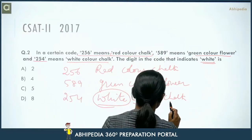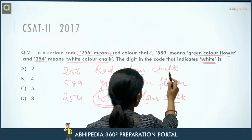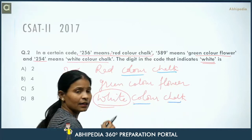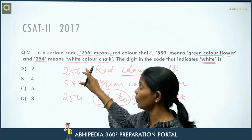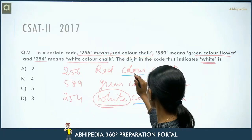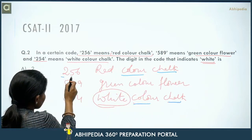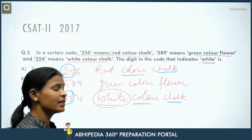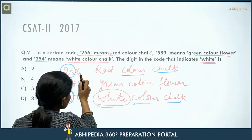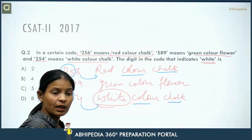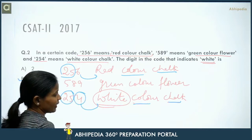White appears only in the third statement. 'Color' and 'chalk' are common in the first and third statements — so their corresponding numbers 2 and 5 are common to both codes. That means 2 and 5 are codes for 'color' and 'chalk'. The remaining digits: 6 is for 'red' and 4 is for 'white'. So the answer is 4.